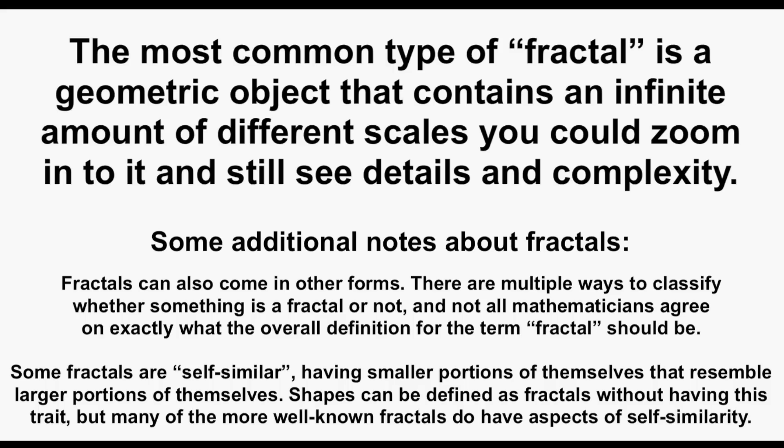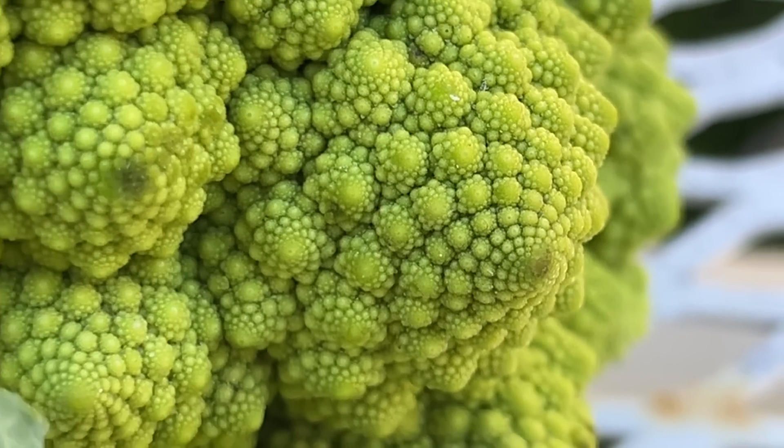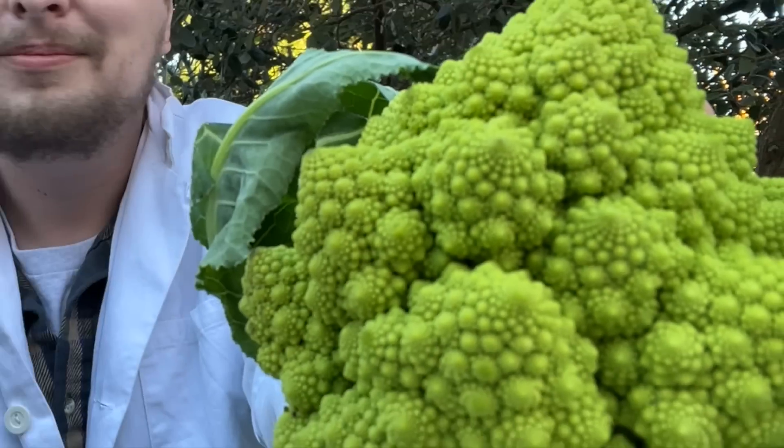There are many types of fractal, but the most common type is a geometric object where if you zoom into it, there are an infinite amount of different scales that continue to have detail and complexity. Some of the most popular fractals have a trait known as self-similarity, where smaller zoomed-in portions of a fractal may resemble larger zoomed-out portions of itself.